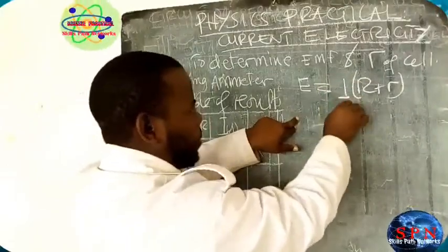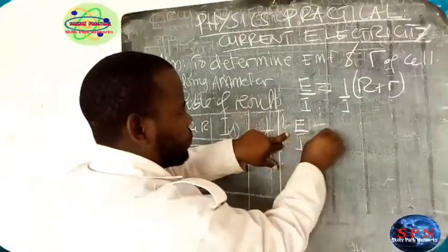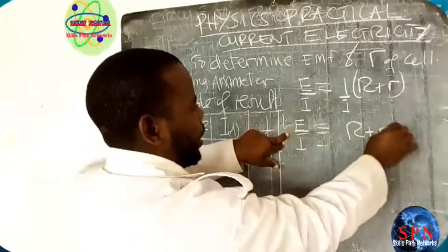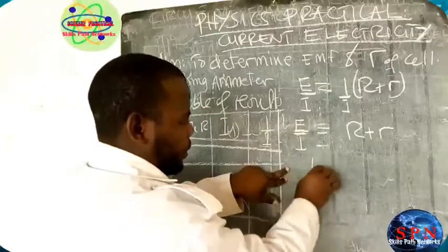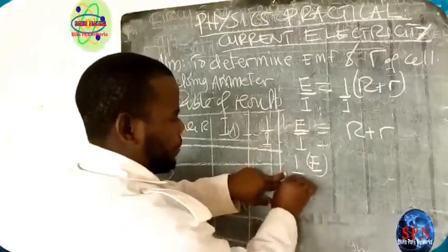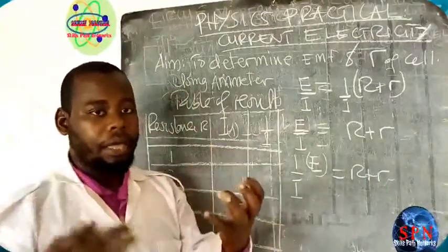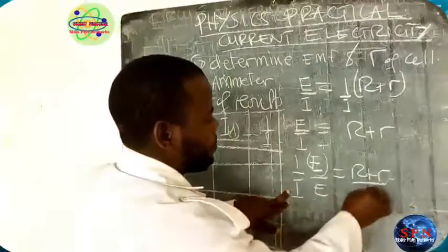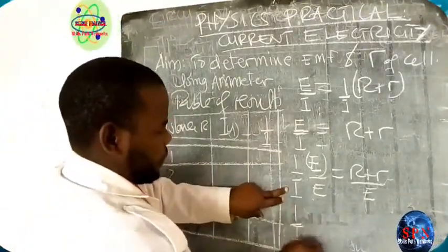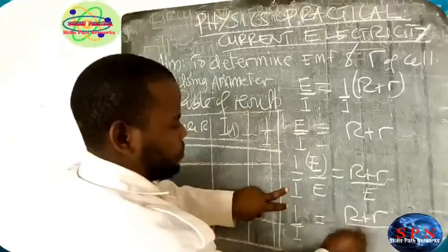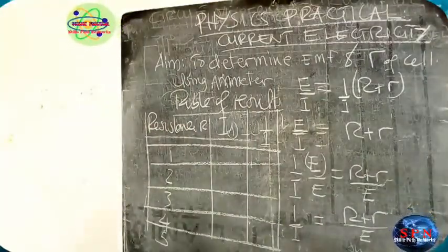We want to find current, so we divide both sides by I. It means EMF over I is equal to R plus r. Then, rearranging: E times one over I is equal to R plus r. Dividing both sides by E, we get: one over I is equal to R over E plus r over E. That is our derived equation.